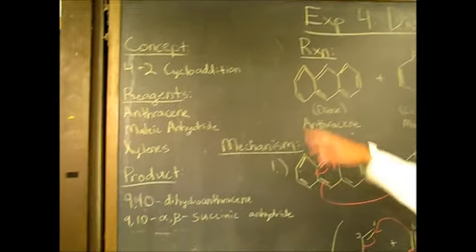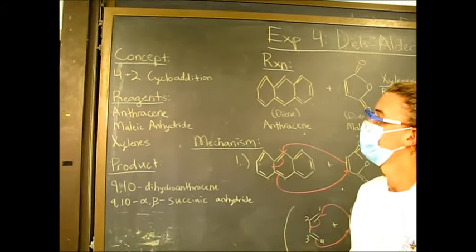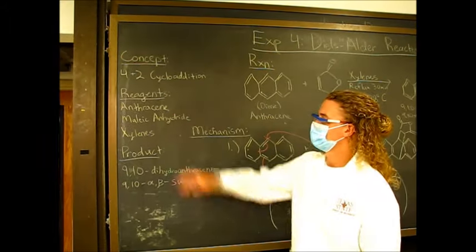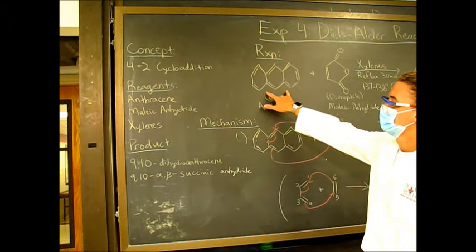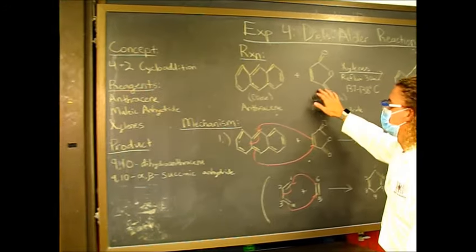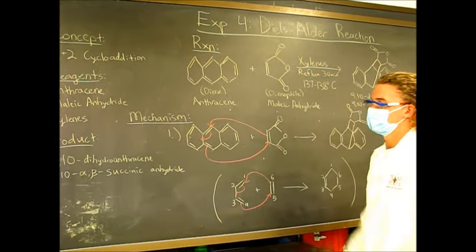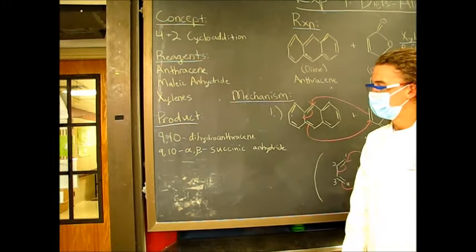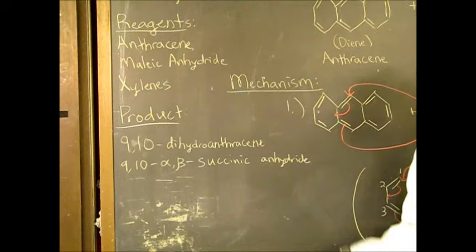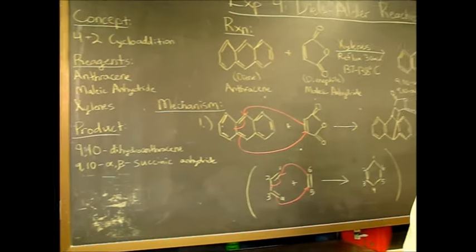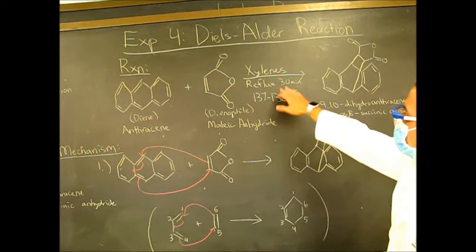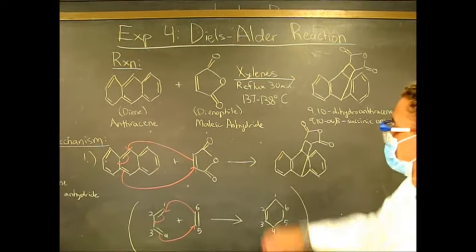That means we have 4 pi electrons adding 2 pi electrons from your other molecule. The reagents we're going to be using are anthracene, which is this guy, the maleic anhydride you see here, and xylene to be our solvent. The product we're going to get is 9,10-dihydro-9,10-alpha-beta-succinic anhydride. That's all one big title, it's all one big compound, that's this product here. So this is the overall reaction. We see you get xylene. We reflux it for 30 minutes at around 140 degrees Celsius.